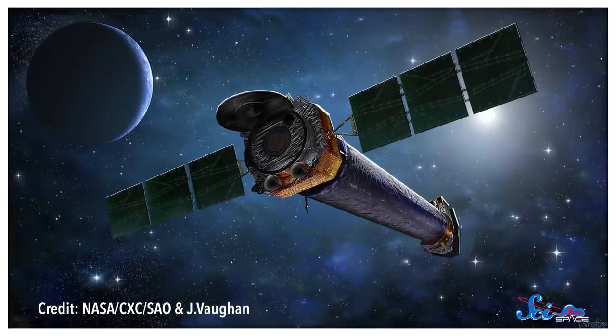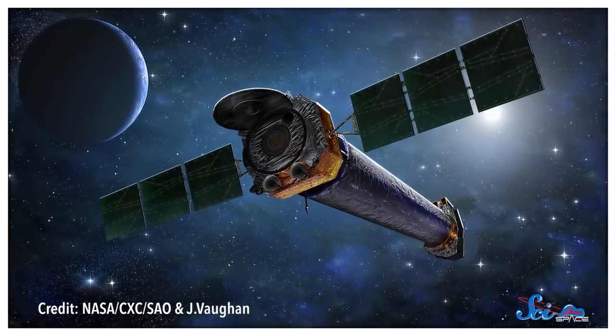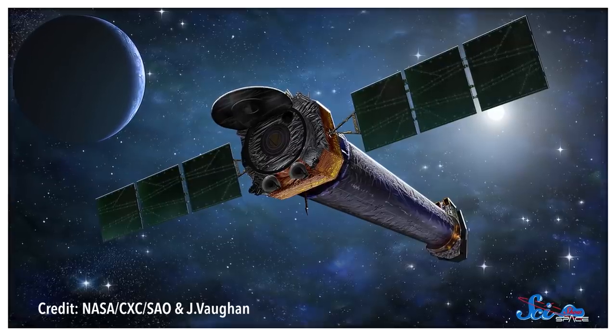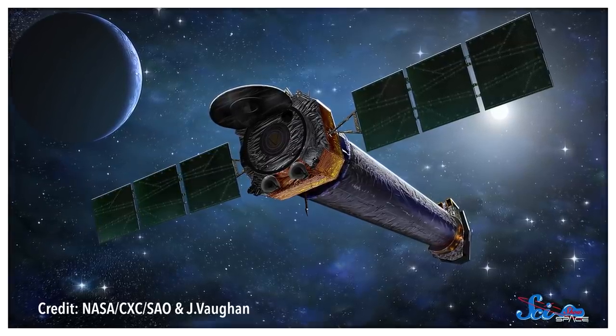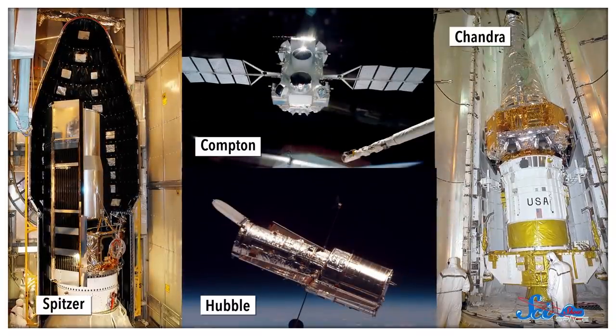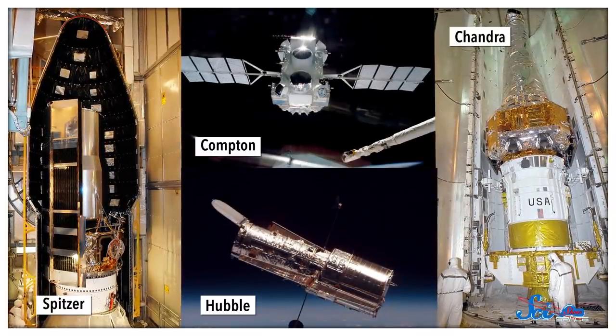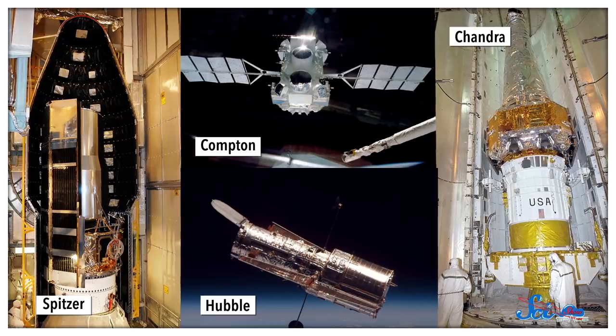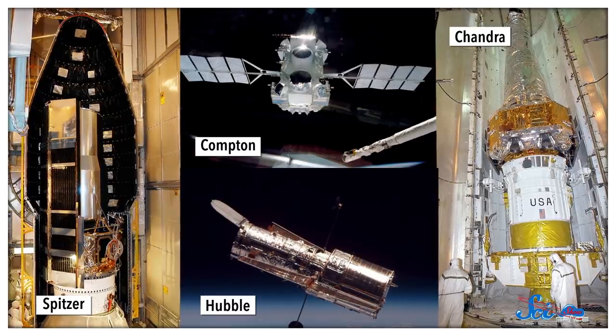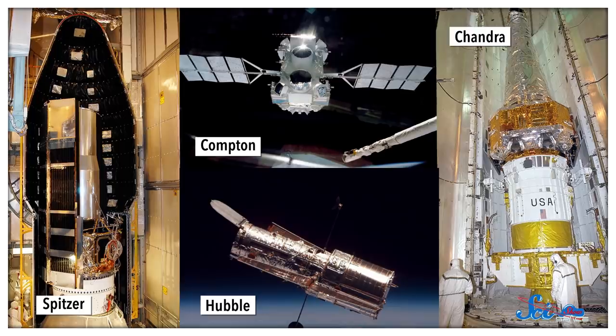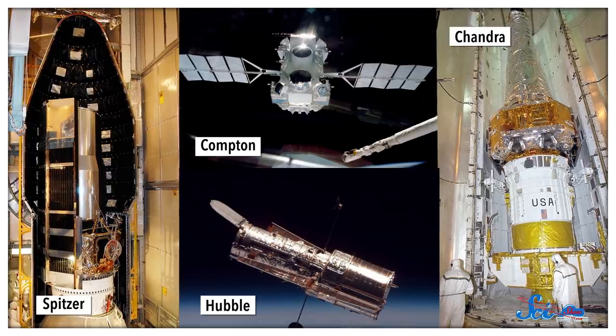That's why NASA built Chandra, an X-ray telescope launched in 1999, that would give us incredible new insights into the X-ray universe. Chandra was one of four telescopes that made up NASA's Great Observatories Project. The others, Hubble, Compton, and Spitzer, each operated in a different part of the electromagnetic spectrum. And with the four of them, astronomers could observe just about everything that gives off light in space.